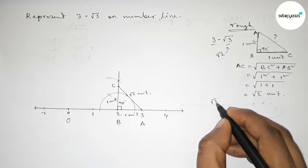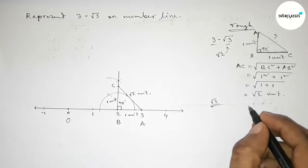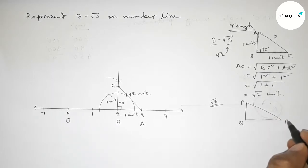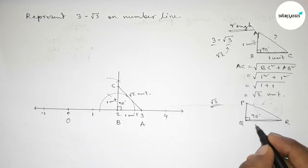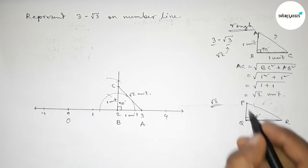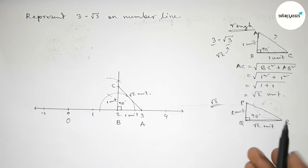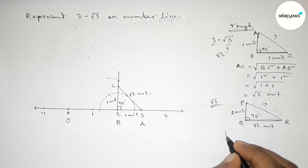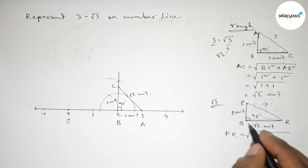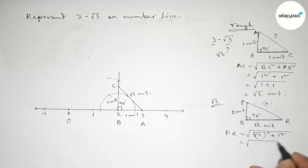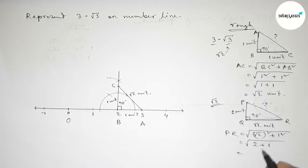Now we have to represent root 3. Roughly drawing a right angle triangle PQR with a 90 degree angle. Taking the base equal to root 2 unit and the perpendicular equal to 1 unit. Then the hypotenuse PR by Pythagoras theorem equals root over (root 2 squared plus 1 squared) equals root over (2 plus 1) equals root 3 unit.